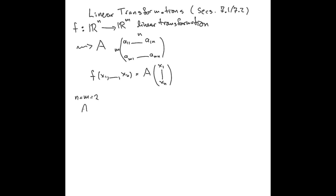Let me just illustrate this with the case n equals m equals 2. So this A is a 2 by 2 matrix [a b; c d], and notice that [a b; c d] applied to (1, 0) is (a, c), and similarly if you apply it to (0, 1) you get (b, d).